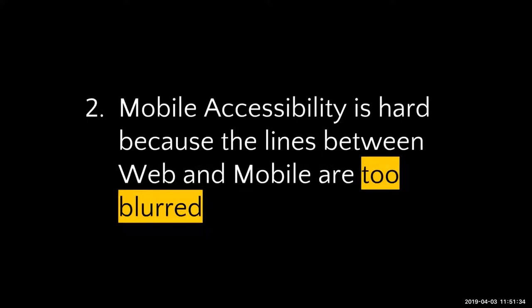Mobile accessibility is hard because the lines between web and mobile are way too blurred. We're serving up HTML code wrapped up, accessing special mobile sites via browser. People are going to access your content in ways you never dreamed of — on an Xbox surfing the web, on a smart TV. The way we access technology is way beyond cell phones and computers. We've got tablets, smart watches, smart televisions. If we're thinking very much web-mobile, that's just not the way to think about it anymore. It's muddy, it's dark, it's scary, and we're all in it together.